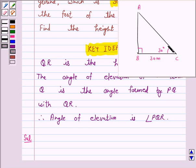According to the question, the angle of elevation of A from C is 30 degrees. So, we have given angle ACB is equal to 30 degrees and BC is equal to 30 meters.